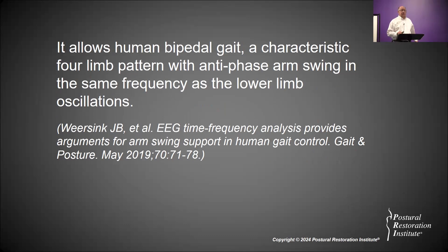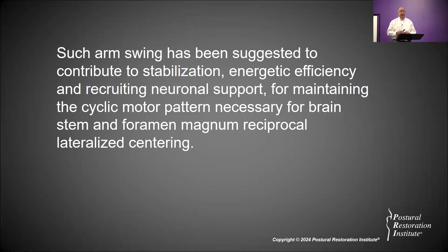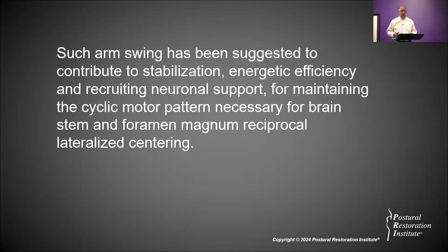The long-seated Hruska Alternating Reciprocal Rotation Test enables one to place, position, and rest the foramen magnum in a centered state of stability that is close to the ground for upper extremity regulation of forward locomotor movement without demand placed on the lower extremities for lift. It allows the human bipedal gait characteristic four-limb pattern with antiphase arm swing — when one arm is going forward, the other should be going back — in the same frequency as the lower limb oscillation occurs.